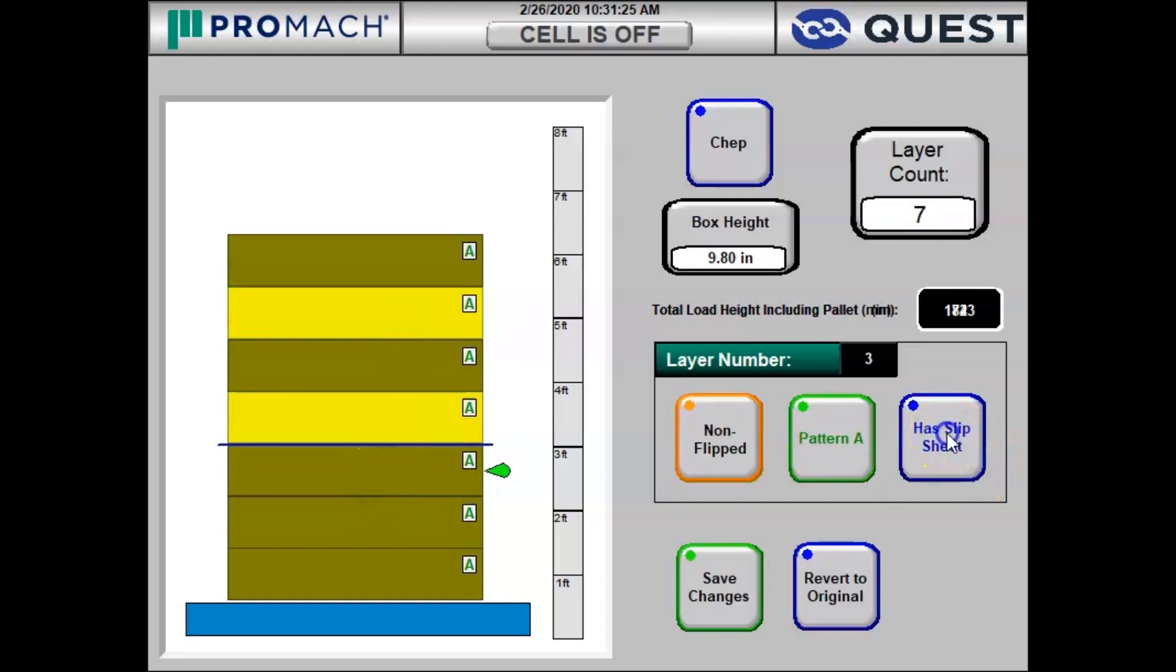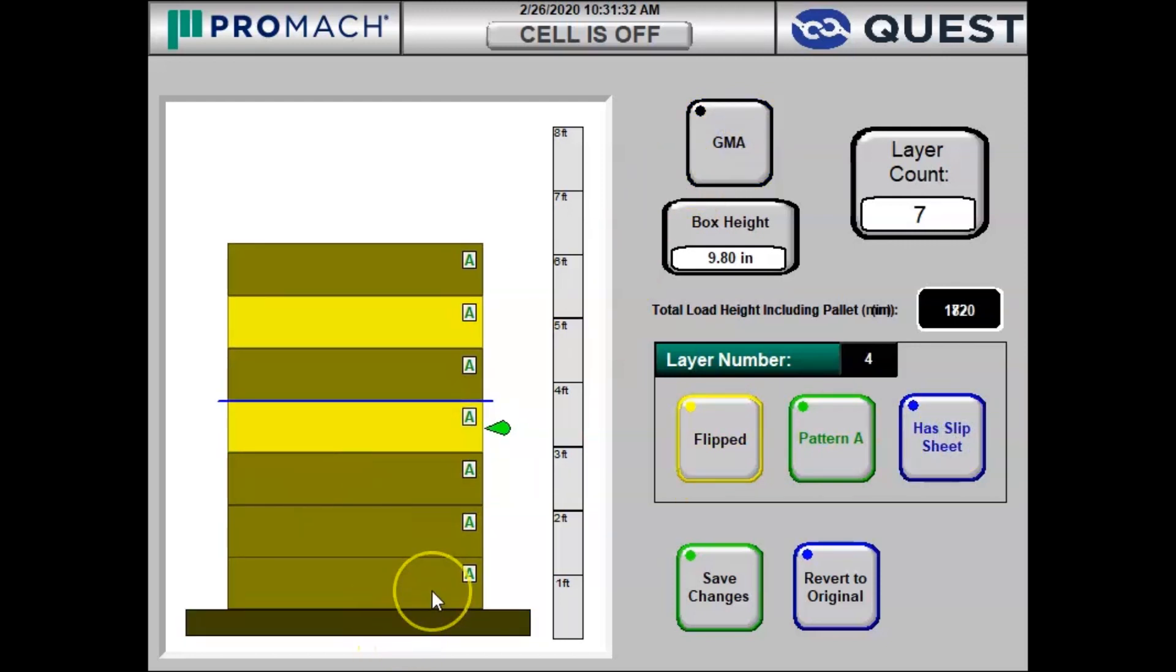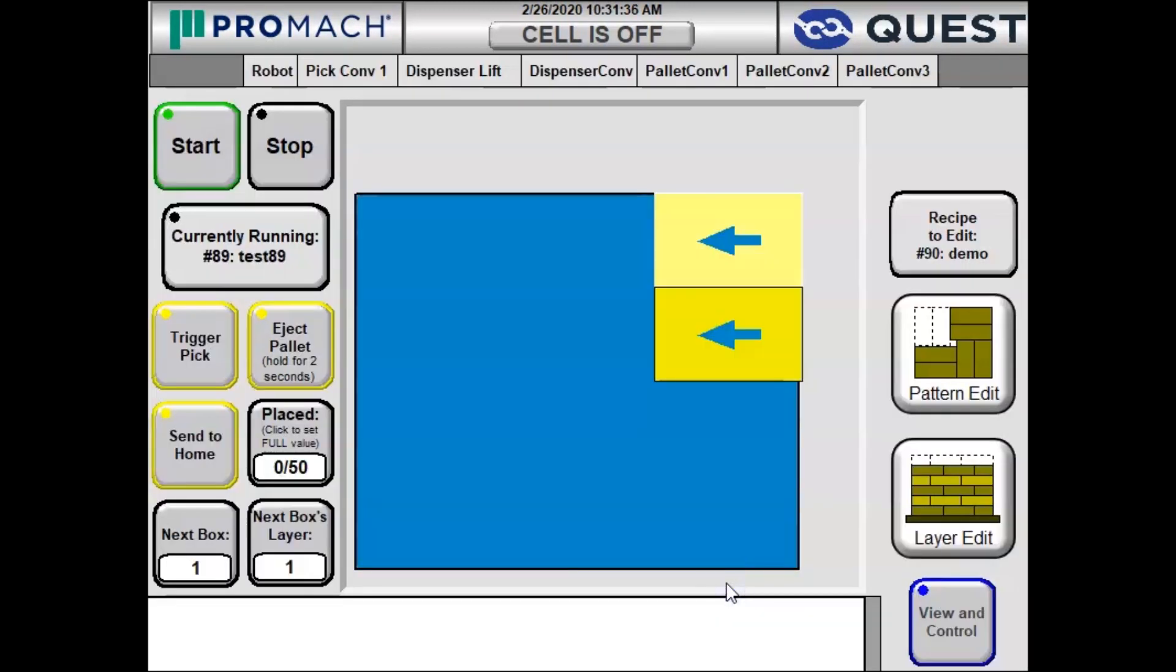And let's say instead of a slip sheet on layer three, we put a slip sheet on layer four. And let's say it's a GMA palette instead of a CHEP palette. And we're going to save our changes and we have our brand new recipe complete.